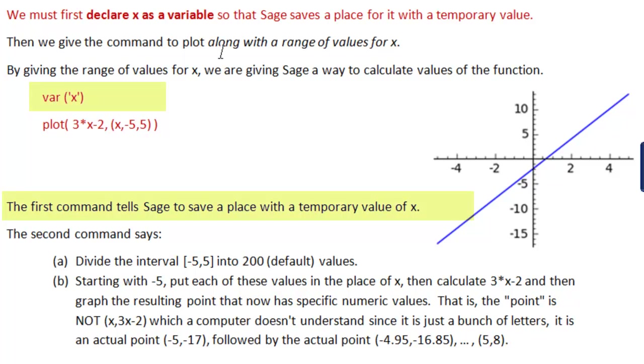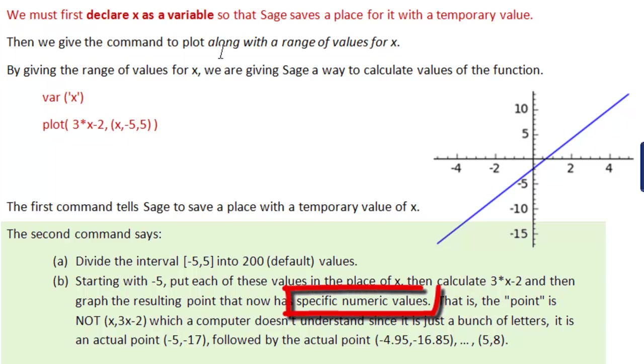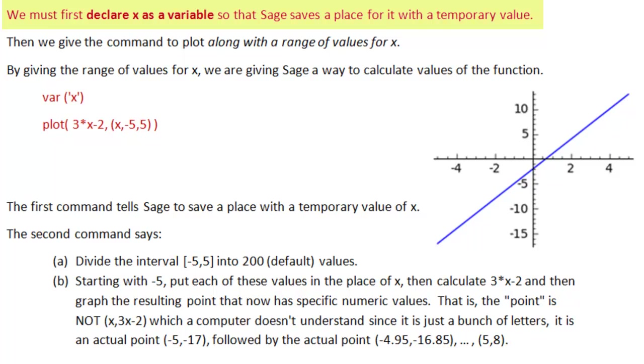So the first command, var parentheses and in quotation x, tells Sage to save a place with a temporary value of x. The second command says, just in case you wanted to know, divide the interval, the range of x, into 200. That's the default number of values. And then starting with minus 5, put each of these values in the place of x and calculate 3 times x minus 2. And then graph the resulting point that now has specific numeric values. That is, the points are not x, 3x minus 2, which a computer doesn't understand since it's just a bunch of letters. They are actual points, minus 5, minus 17, followed by the next actual point, minus 4.95, minus 16.85, all the way up to when x equals 5, we get y equal to 8. So that's the idea of a variable. You're going to put values in it that the computer can understand. But first Sage needs to save a place for that variable.